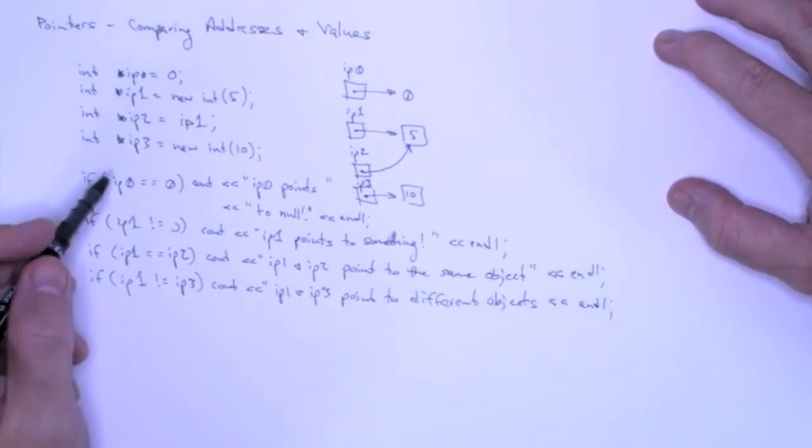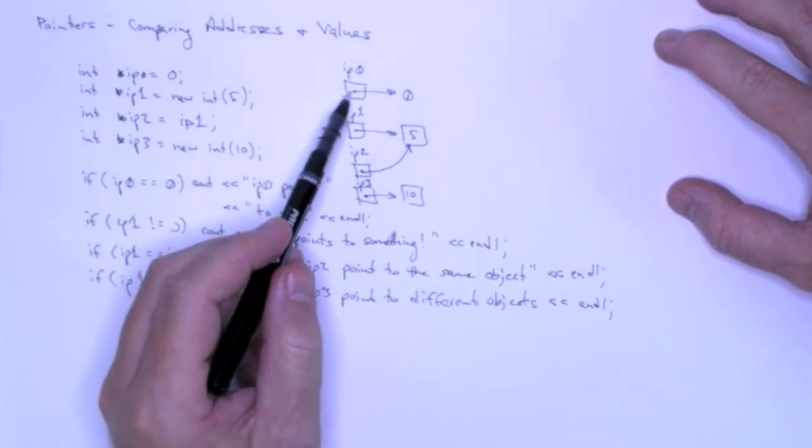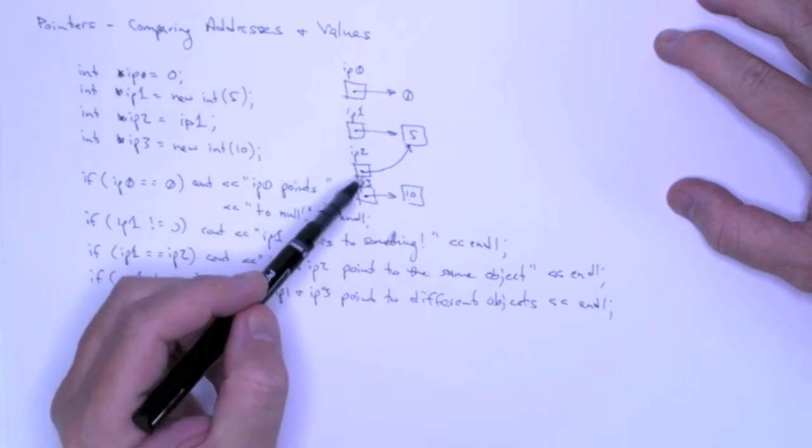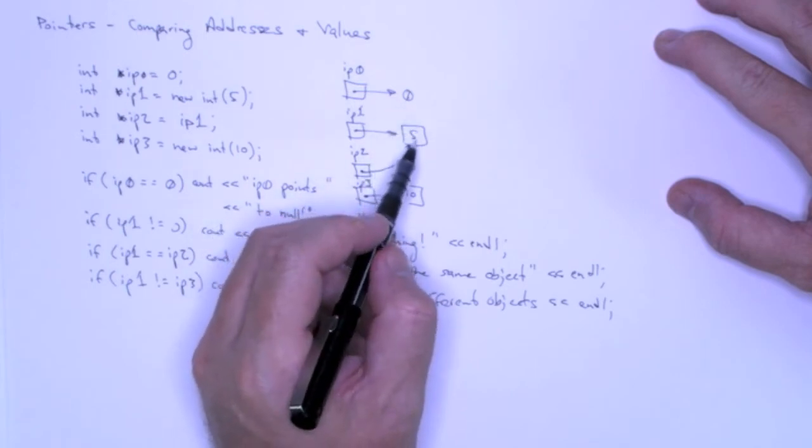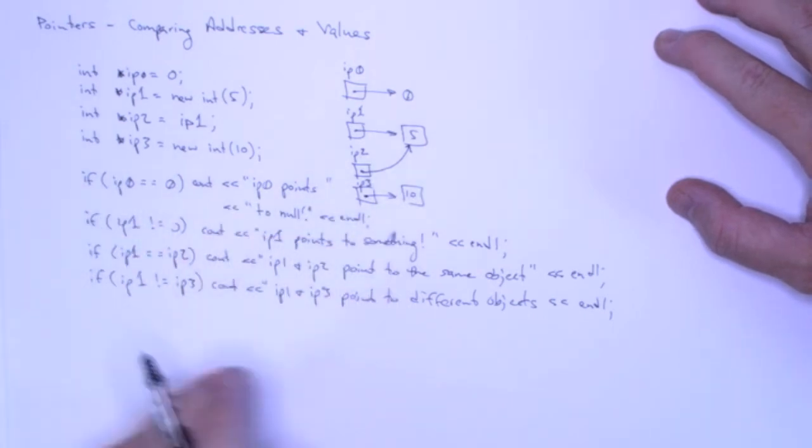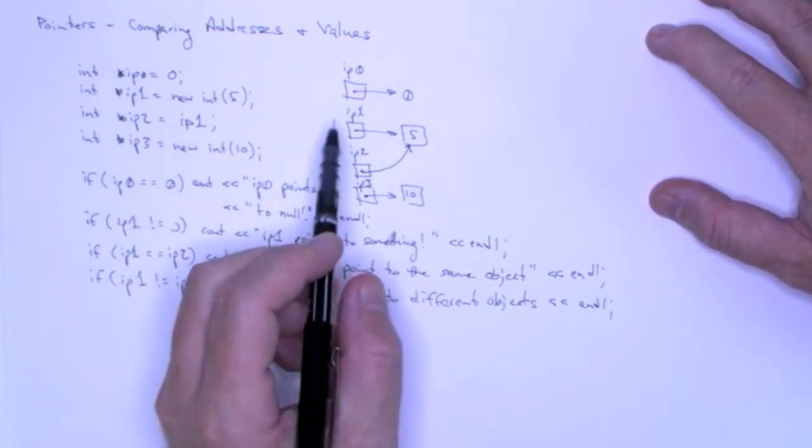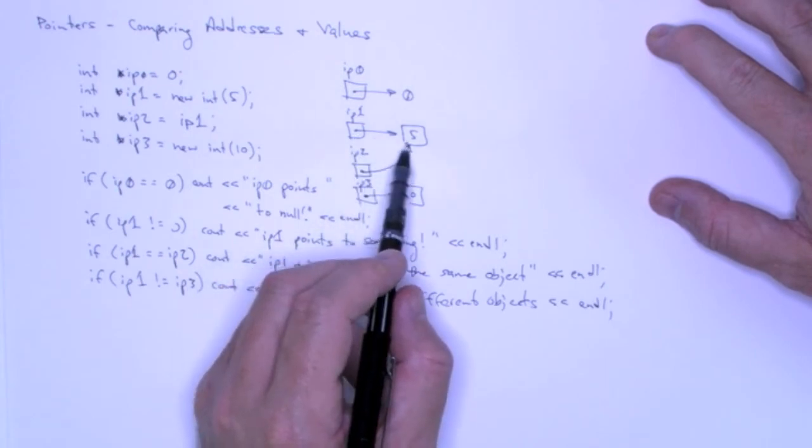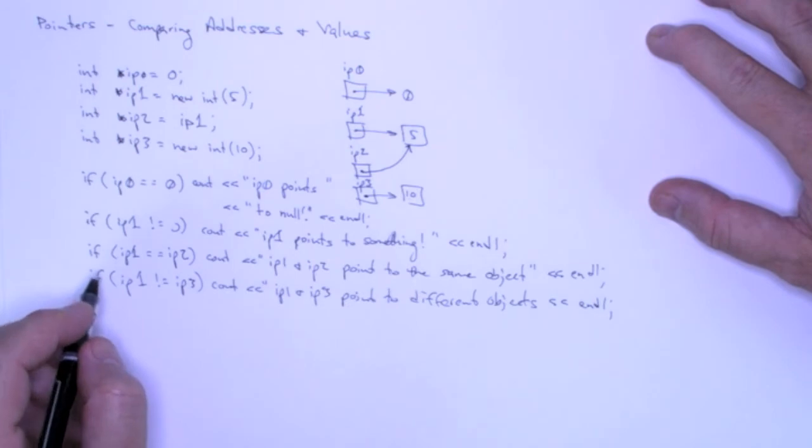Now keep in mind that all of these comparisons we've done thus far have been using the addresses that the pointers stored. We are not actually doing any comparisons yet with the objects they point to, the values they point to. And so we're going to do that now. And remember, in order to get the value or get the object that pointers point to, you have to dereference them.